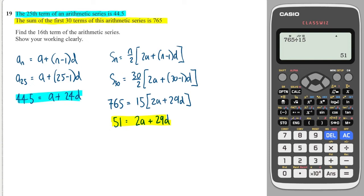So we need to just solve these two simultaneously. So what I would do is I will double the blue one. And 44.5 times 2 is 89, and that will be 2a plus 48d. And I'll write the yellow one below. And then the a's are lined up so I can subtract. 89 minus 51 is 38, and 48 minus 29 is equal to 19. So therefore that tells us that 38 divided by 19 is 2.